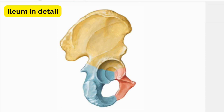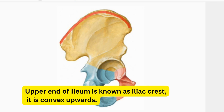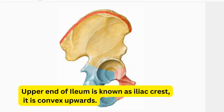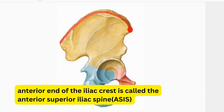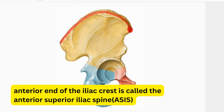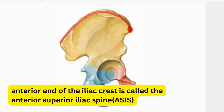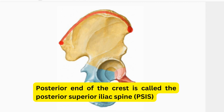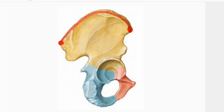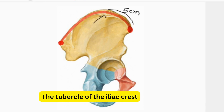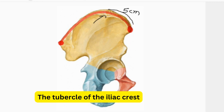Now we will see the ilium in detail. The upper end of the ilium is known as the iliac crest, which is convex upward. At the anterior end of the iliac crest there is a small bony projection known as the anterior superior iliac spine. Similarly, on the posterior end we have a small bony projection known as the posterior superior iliac spine. 5 cm behind the anterior superior iliac spine there is a tubercle known as the tubercle of the iliac crest.